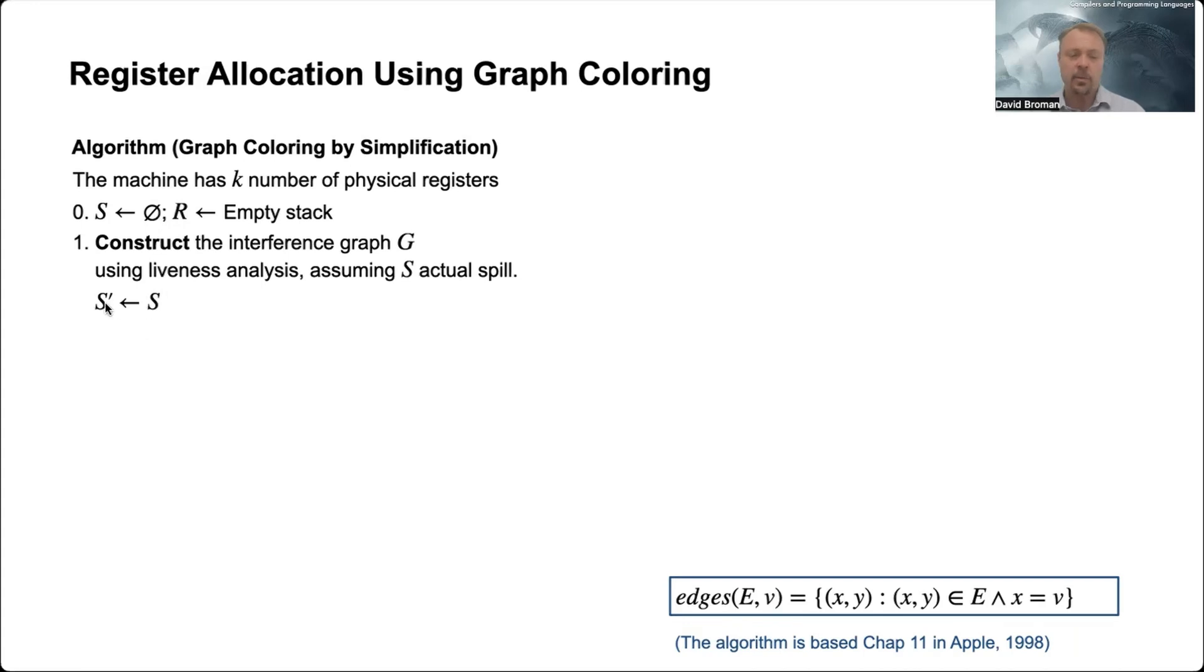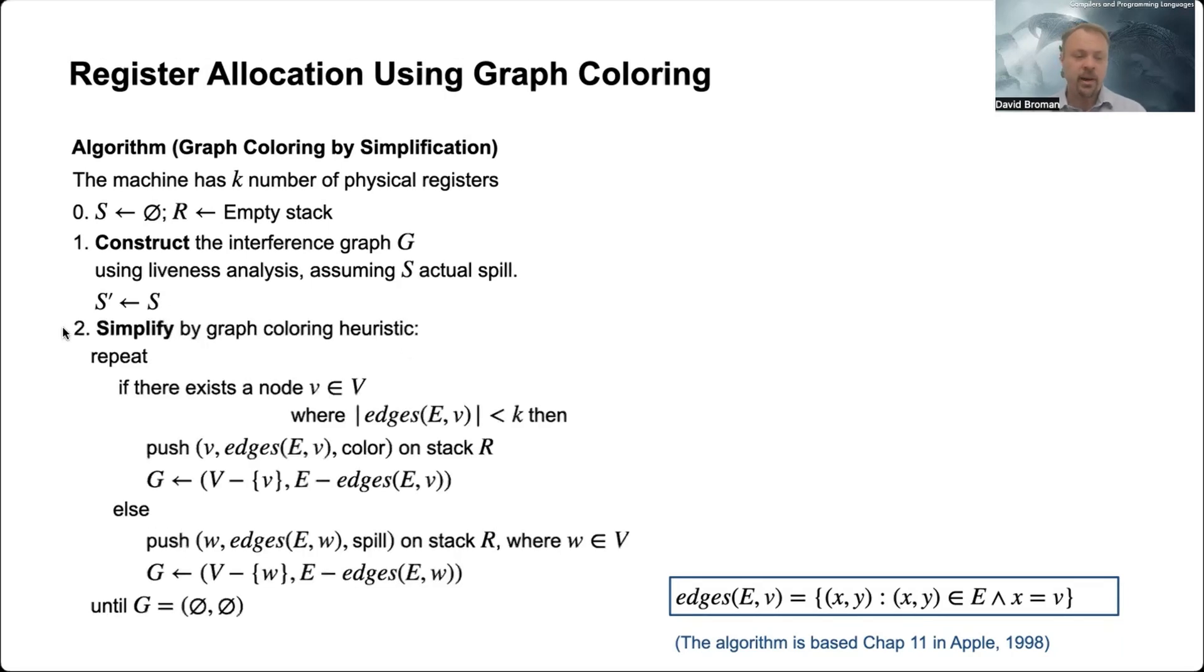To begin with, it's empty anyway, but we save that in S' because we will use that later on in the algorithm. The second step is called the simplify step.